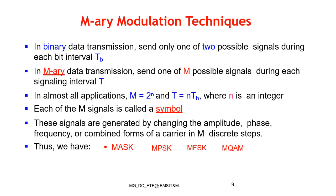M = 2^N, where N is the number of bits and M is the number of states. For QPSK, N = 2, so 2^2 = 4 states: 0,0; 0,1; 1,0; and 1,1. The symbol duration T = N × Tb. In case of QPSK, N = 2, so symbol duration = 2Tb.